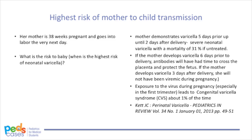One more twist: let's say Allie's mother is 38 weeks pregnant and goes into labor the very next day. What is the risk to the baby? The highest risk of severe varicella infection to the newborn is when the mother has a rash five days before or up to two days after delivery, as the baby may have caught a large viral dose across the placenta but not had enough time to acquire anti-VZV antibodies. If she develops the rash six days before delivery, the baby will have enough antibodies to avoid severe disease. Perinatal varicella is a very serious infection — the risk of mortality can be as high as 31%.